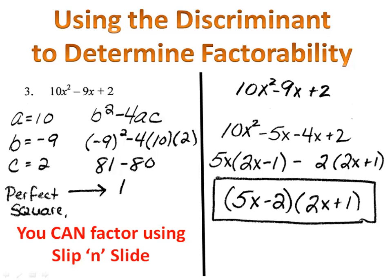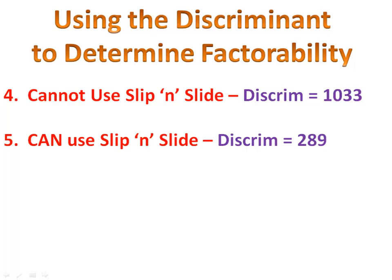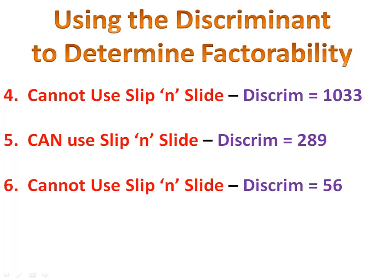There are three more examples in the notes packet. Go ahead and try one or two if you need more practice — pause the video, try a problem or two, then I'll show you the answers. Number 4: we cannot use slip and slide; the discriminant was 1,033, which is not a perfect square. Number 5: the discriminant was 289, which is a perfect square, so you can use slip and slide. Number 6: the discriminant was 56, and 56 is not a perfect square, so you cannot use slip and slide.